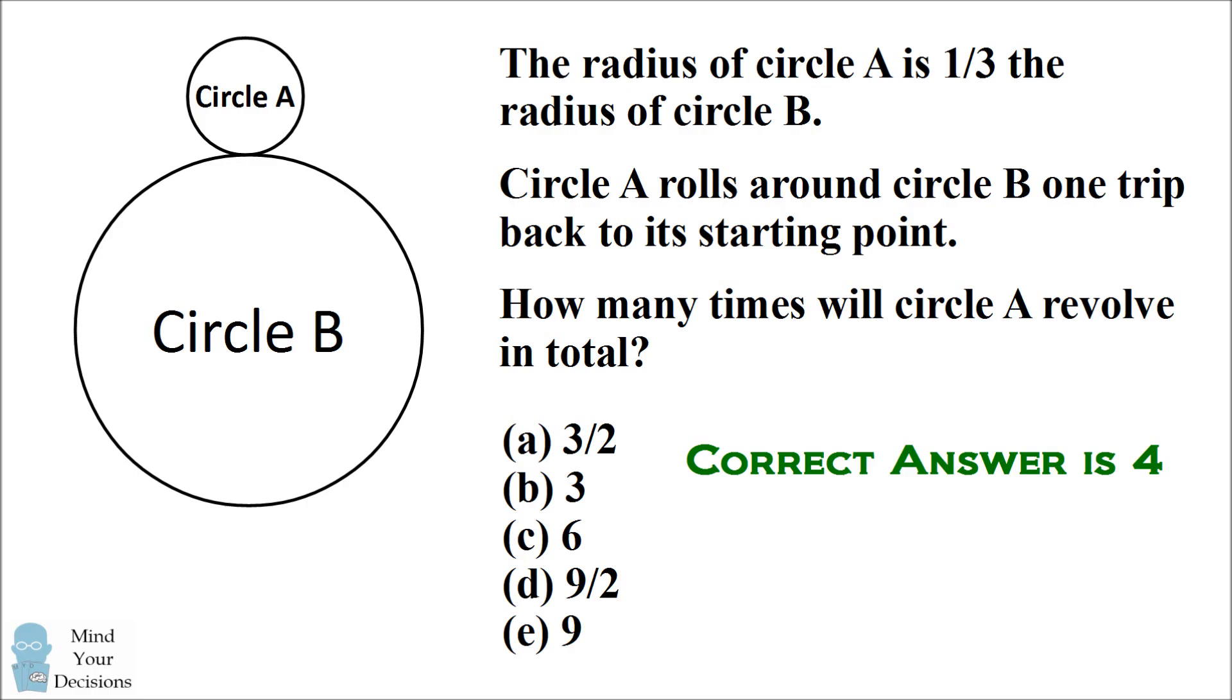And they actually made a mistake. They did not include this as the correct answer. They forgot to take into account that circle A is revolving around circle B and that would have added one more trip around.